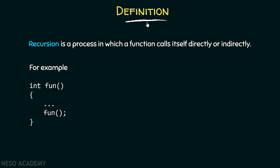What is the definition of recursion? Recursion is a process in which a function calls itself directly or indirectly. For example, function fun is calling itself. Inside this function fun, you are calling again this function only. This is nothing but recursion, because recursion says that it is a process in which a function calls itself directly or maybe indirectly. So here, function fun is calling itself — therefore, this is nothing but recursion.